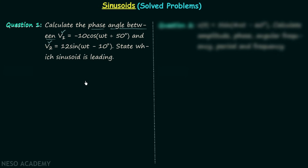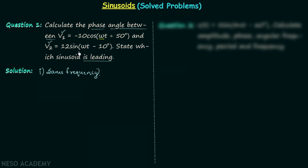We are required to find the phase angle between V1 and V2, and also find out which voltage is leading. In order to compare two sinusoids, the first condition is they should have the same frequency. V1 has frequency ω and V2 also has the same frequency ω, so both V1 and V2 have the same frequency — the first condition is satisfied.